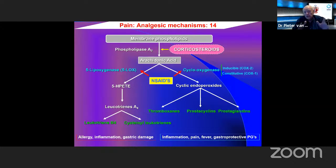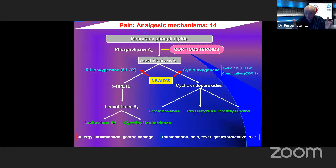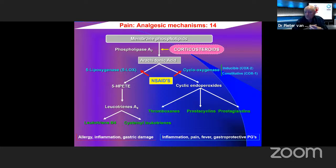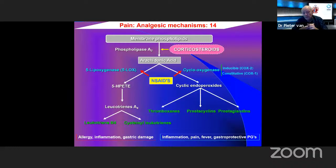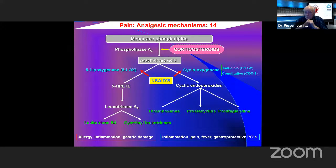Looking at a schematic of the pain cycle: membrane phospholipids are damaged; the enzyme phospholipase A2 converts them into arachidonic acid. This can then follow two pathways: the cyclooxygenase (COX) pathway, producing cyclic endoperoxides, thromboxanes, and prostacyclins; or the lipoxygenase pathway, forming 5-HPETE, leukotrienes B4, and cysteinyl leukotrienes. These final biochemical products cause allergy, inflammation, gastric damage, pain, fever, and gastroprotective prostaglandins.